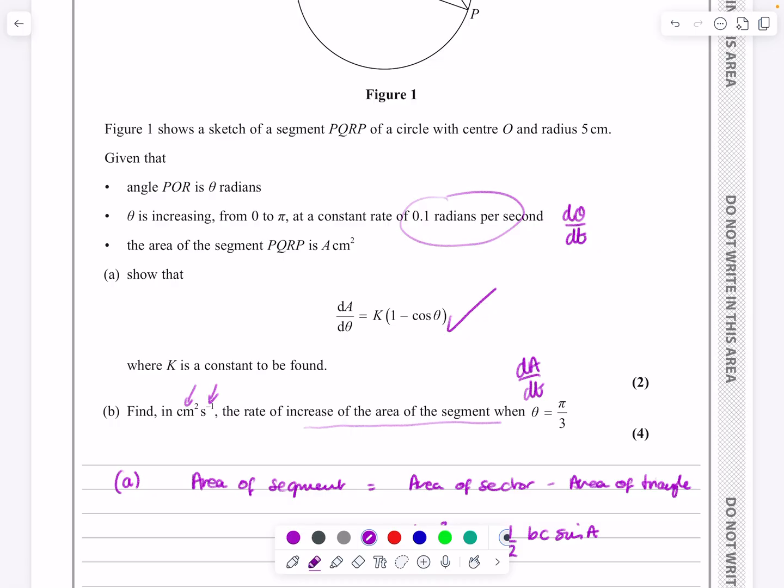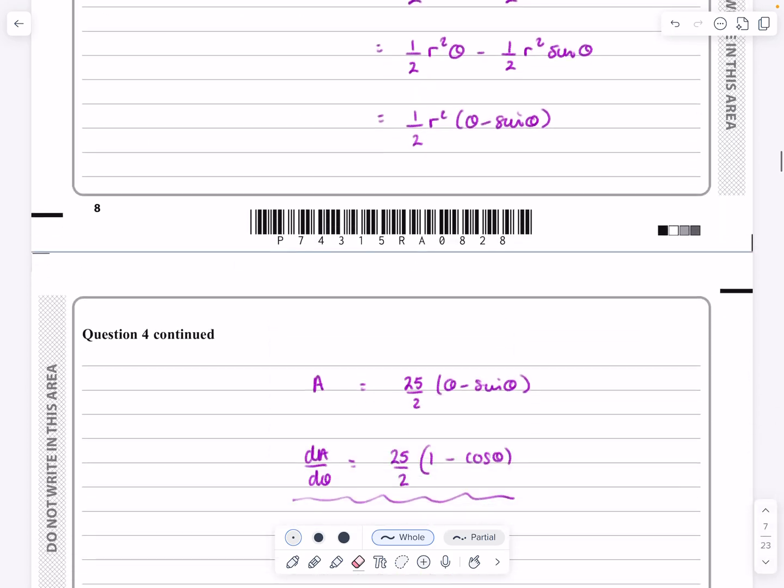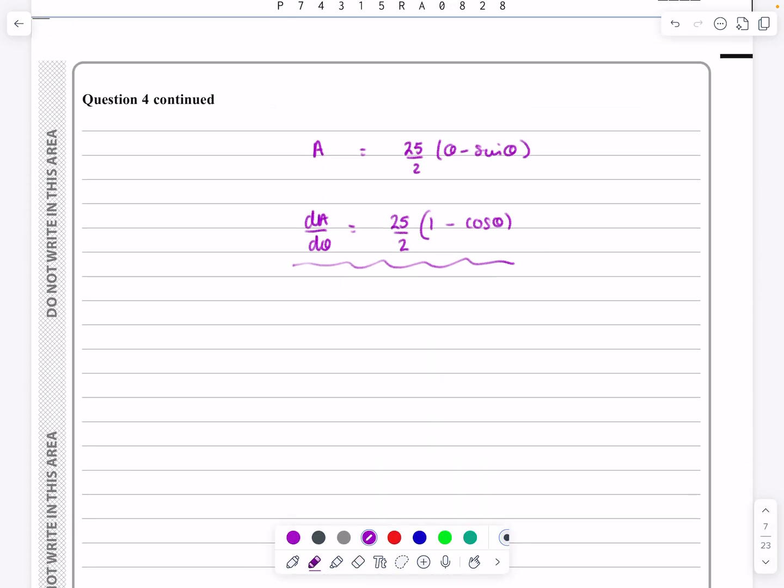Sometimes you can look at the units to help you work out what we've got there. That's an area centimeters squared per second, dA dt. This was a theta per second, dθ by dt. And so given the fact that we've got dA by dθ already in my question here, we should be able to just follow everything through with this one.